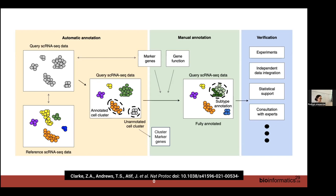Another option is to take your dataset and the reference dataset, integrate them together, and transfer the labels that way instead of directly comparing them. It doesn't necessarily give better results, but it makes a prettier plot for your paper — you can see them on top of each other rather than a heatmap of correlations. The tricky part is that annotation tools aren't necessarily as great as we want them to be.